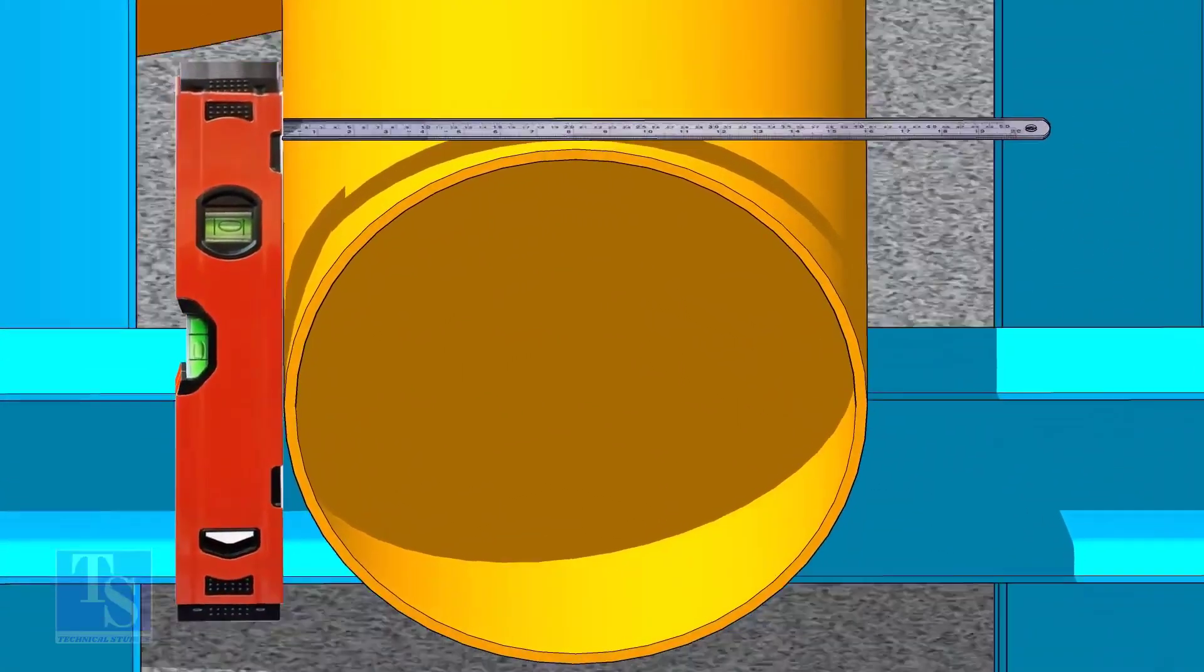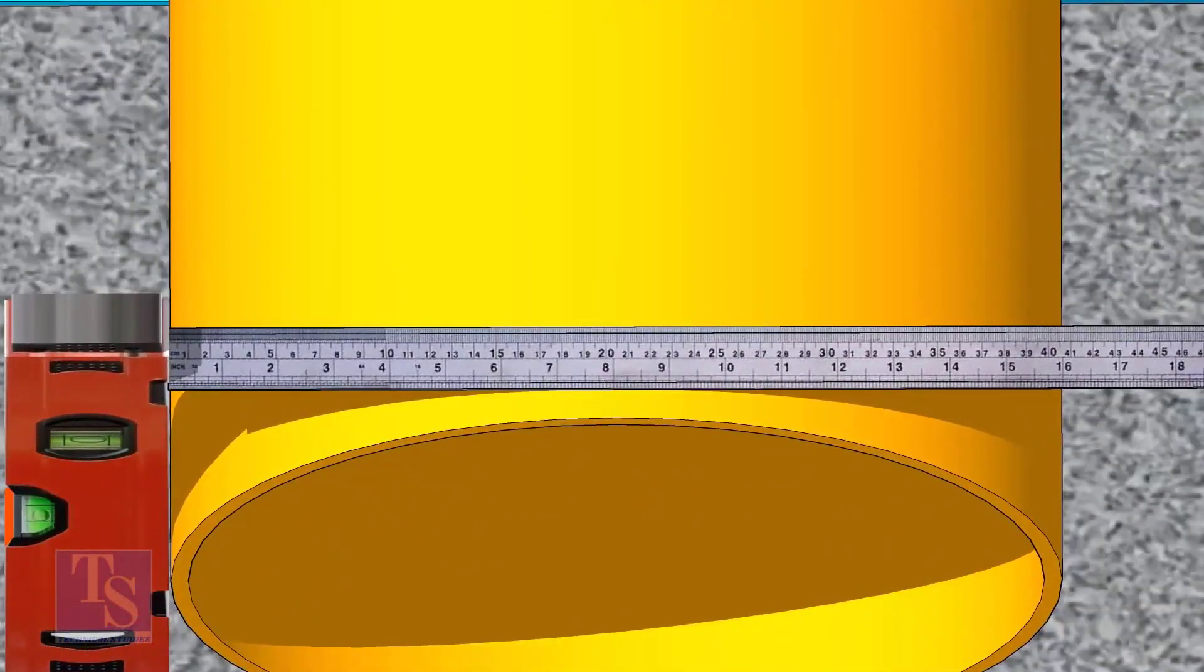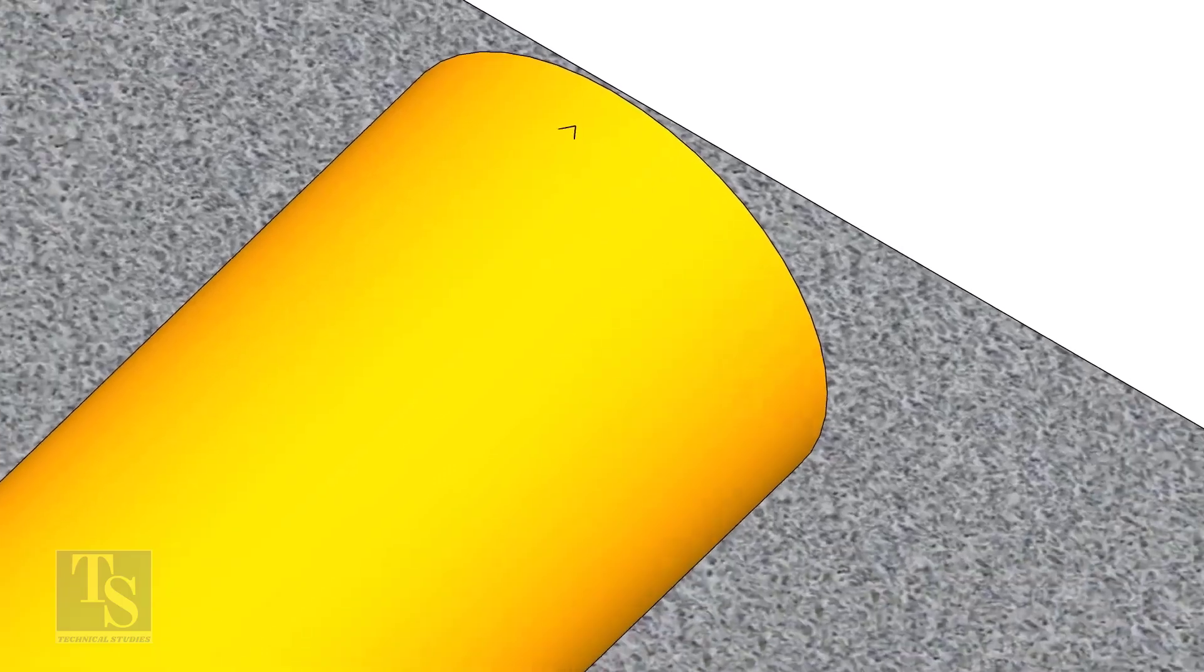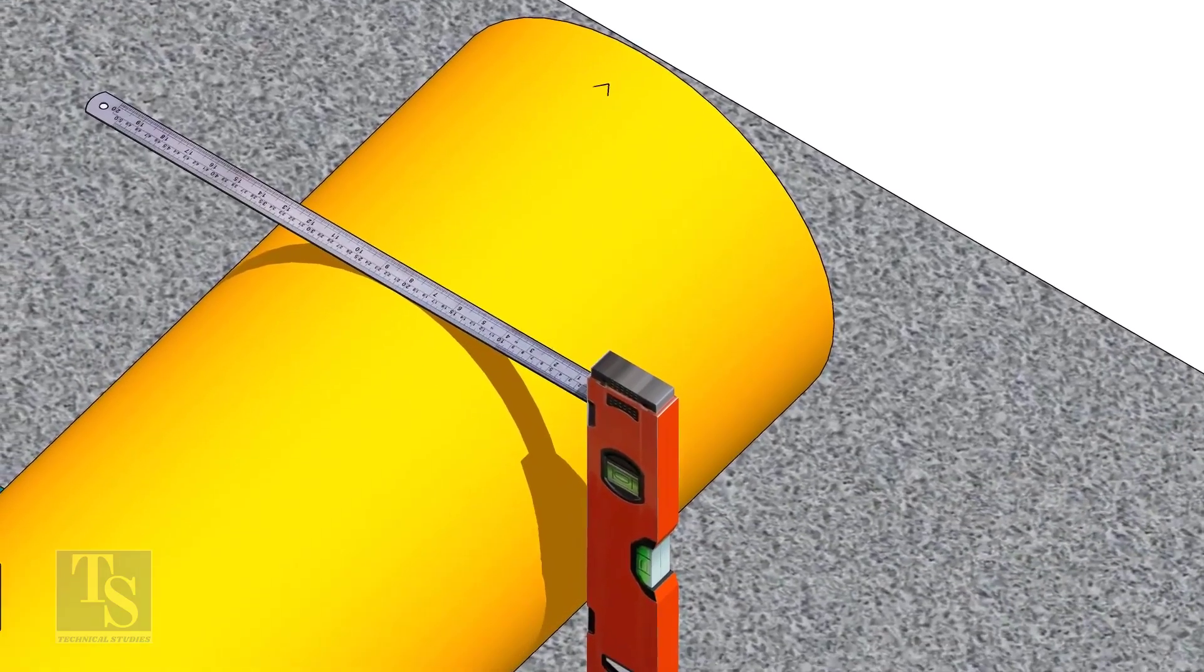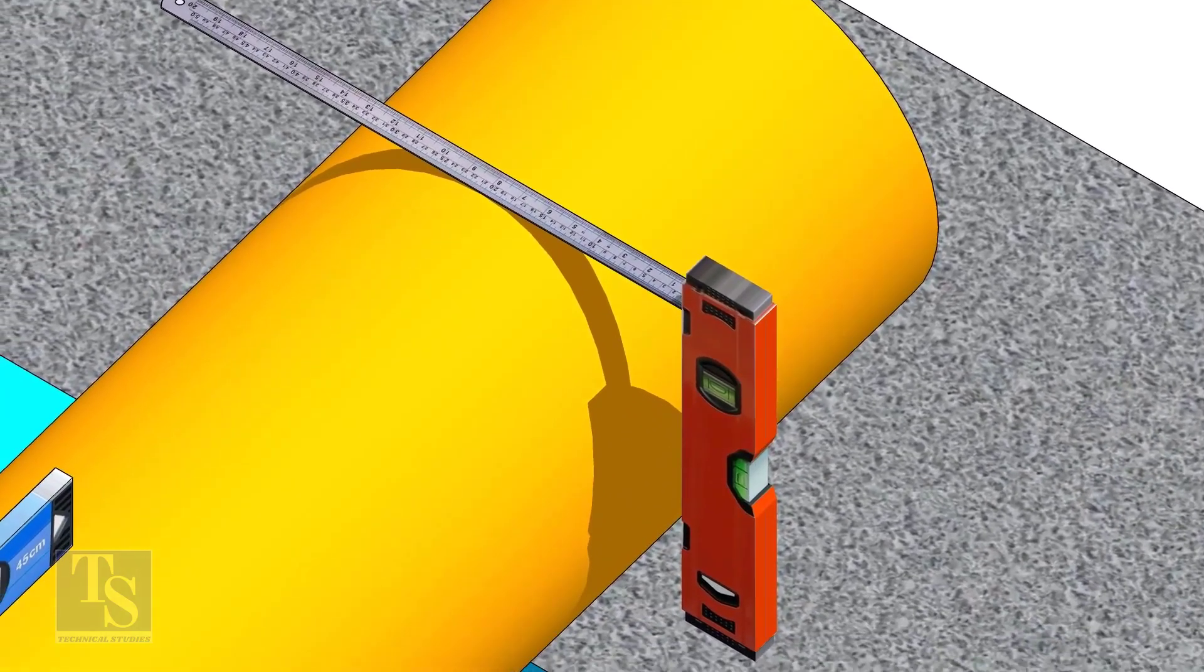Mark half OD at 300mm apart. This pipe OD is 406mm, so mark 203mm from the vertical level bottle on the top of the pipe, and draw a line connecting these marks.